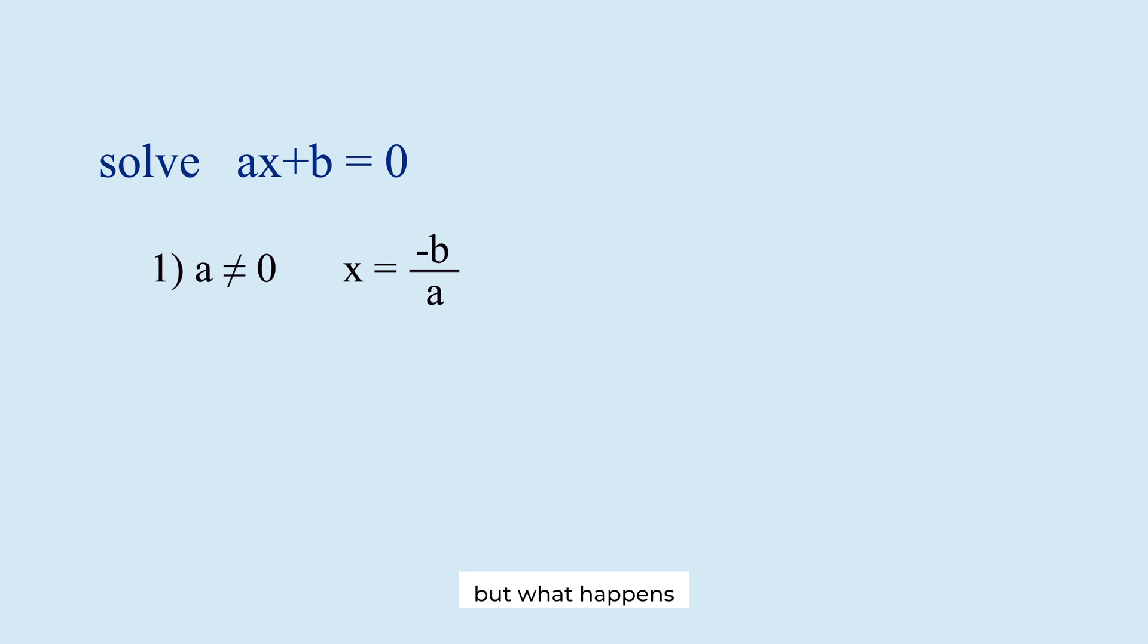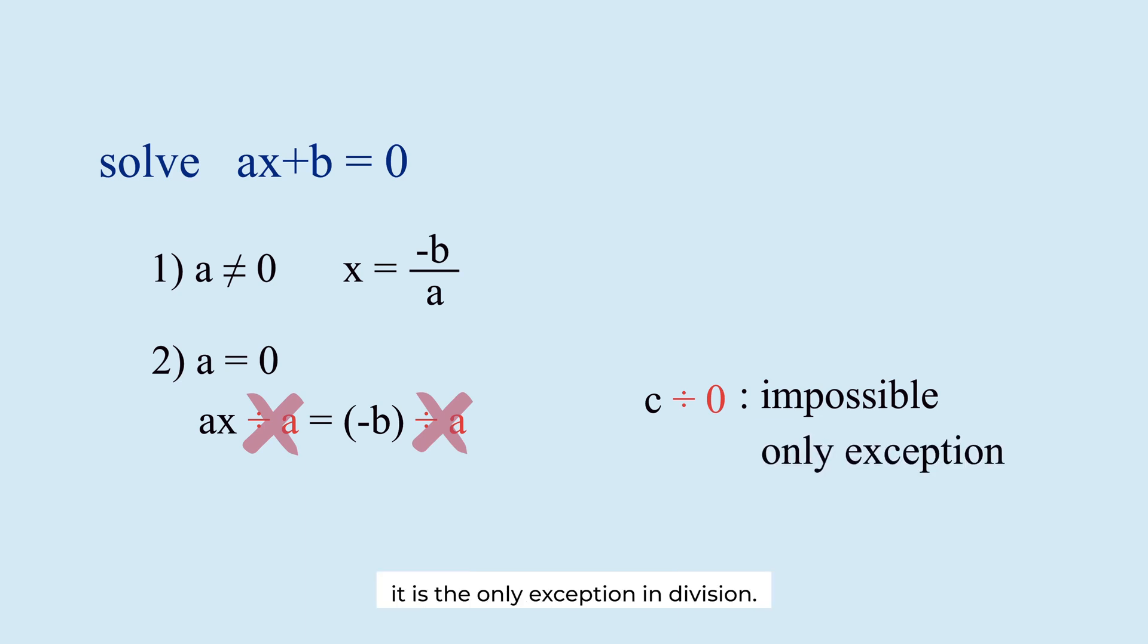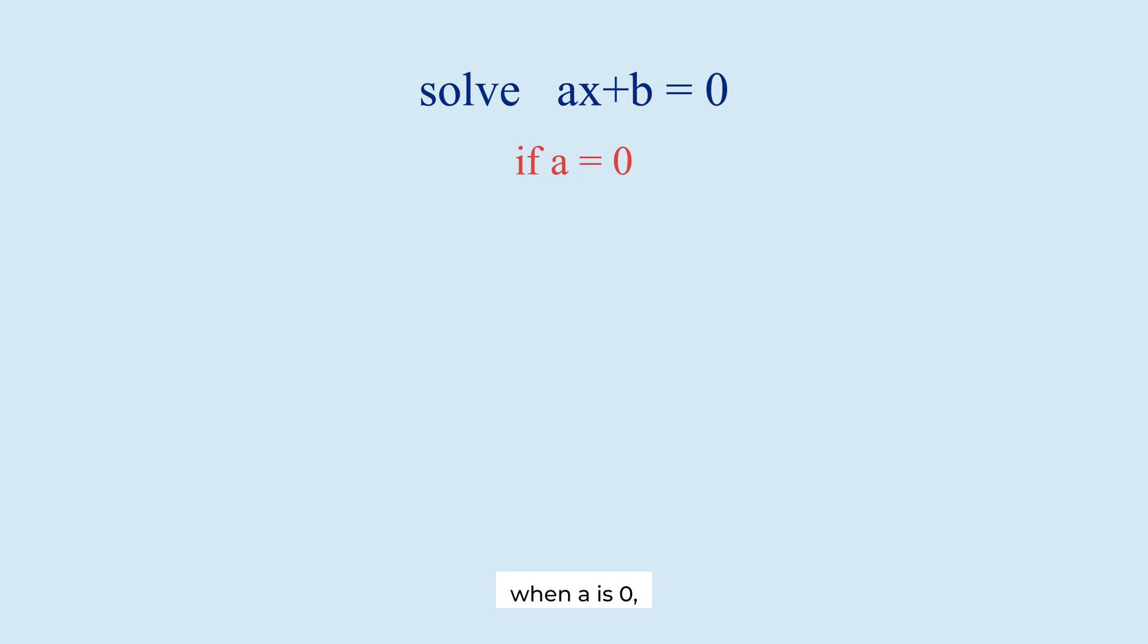But what happens if a is 0? If a is 0, we can't divide both sides by a. Dividing by 0 is not possible in mathematics. It is the only exception in division. Therefore, in this case, we need to find the solution by comparing both sides without dividing by a. When a is 0, there are two possibilities for b: b could be 0 or non-zero.